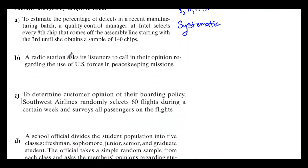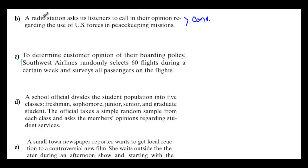For B: a radio station asks its listeners to call in their opinion regarding the use of U.S. forces in peacekeeping missions. This is whoever's listening and wants to call in — so this is a convenience sample. Remember, convenience samples are not usually very reliable. The type of person calling in and the type of radio station will heavily influence who responds.